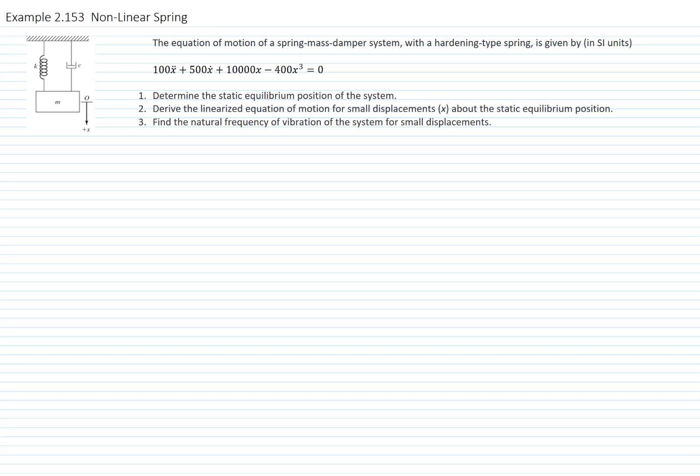The equation of motion is written in terms of x, and x is measured with respect to the static equilibrium position. So when we write the equation, we have 100 times the acceleration, 500 times the velocity, 10,000 times x minus 400x cubed. As you see, we don't have the weight. The weight is already cancelled with the static deflection, as you recall from the theory that we did that analysis.